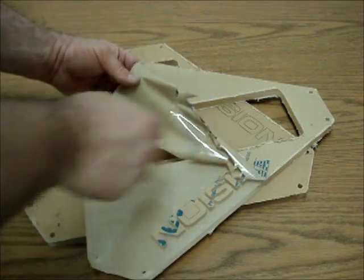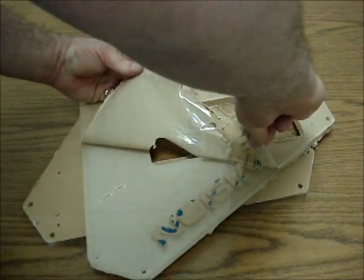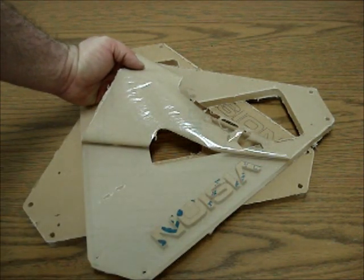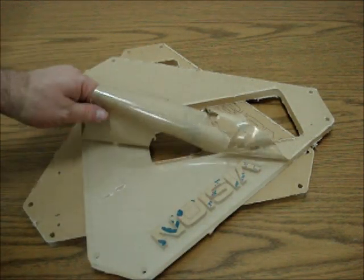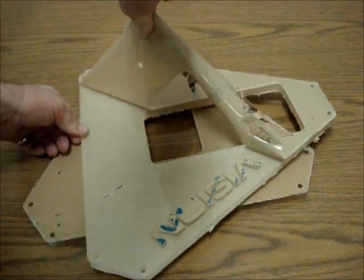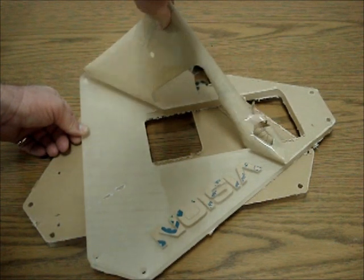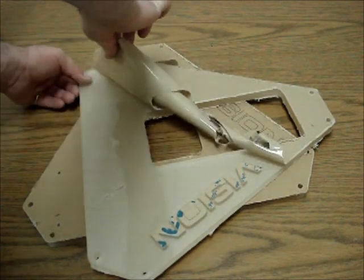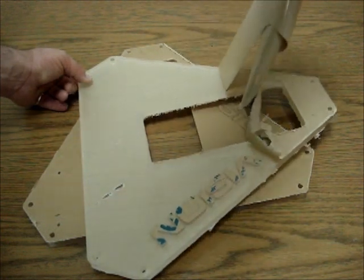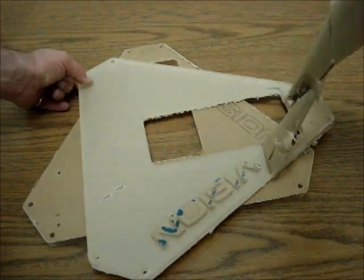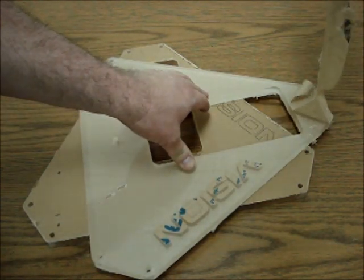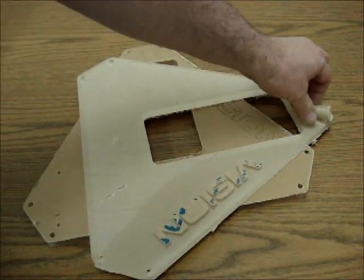It might be easier for some people to do the small inner parts of the letters first, but either way, so long as you get all of it. As you're peeling, if you peel too quickly you might rip the paper. This is pretty new acrylic so it's not such a hard deal to peel off the paper. If the acrylic were several years old, sometimes the paper is very difficult to get off.